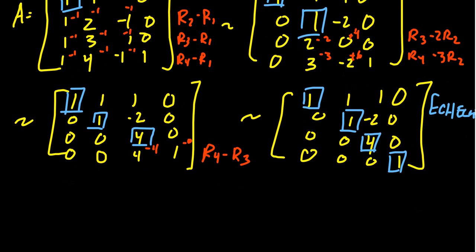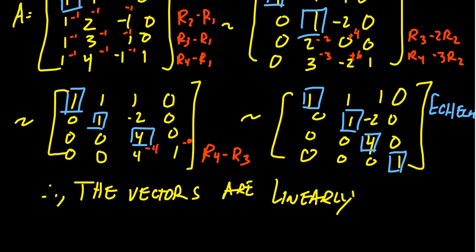And so then we can conclude, therefore, the column vectors of A are linearly independent because we found there was a pivot in each and every column. There's no way of writing one vector as a combination of the others.